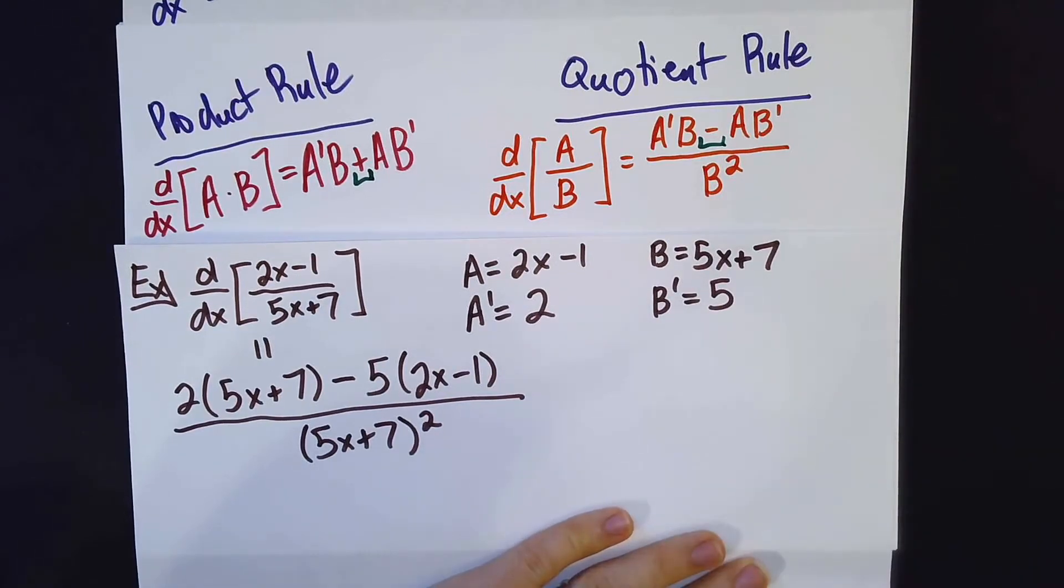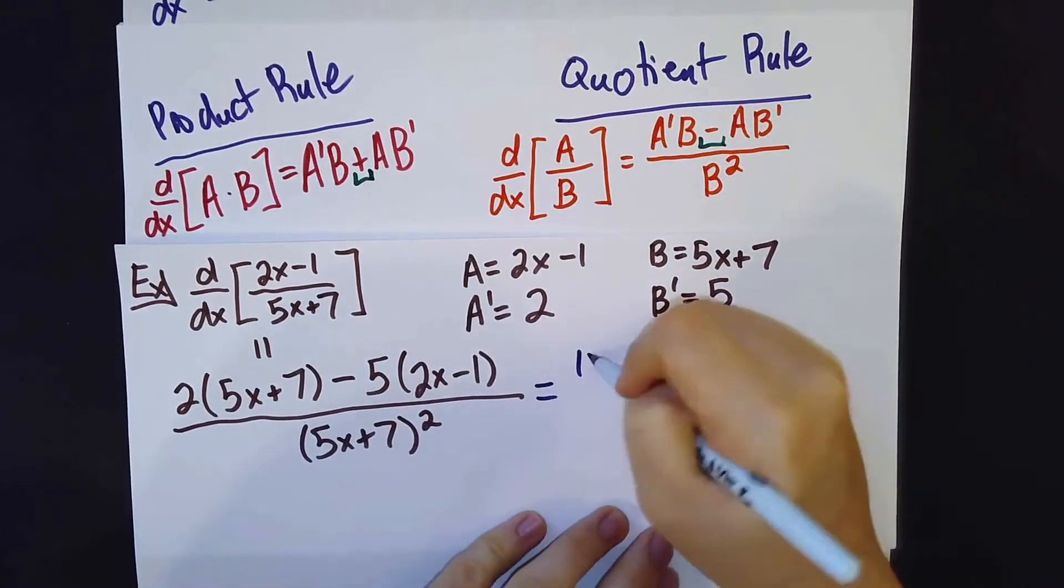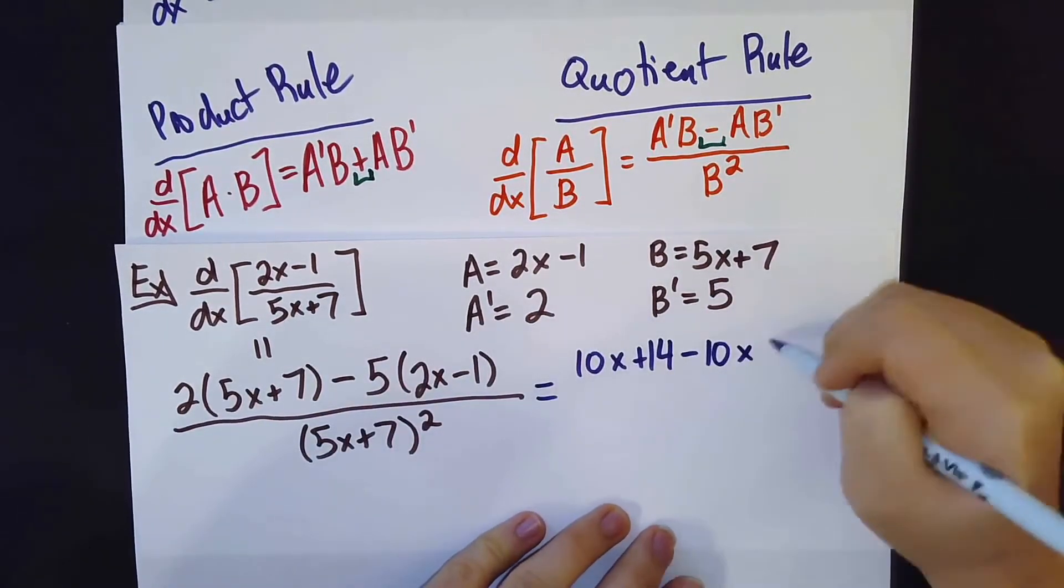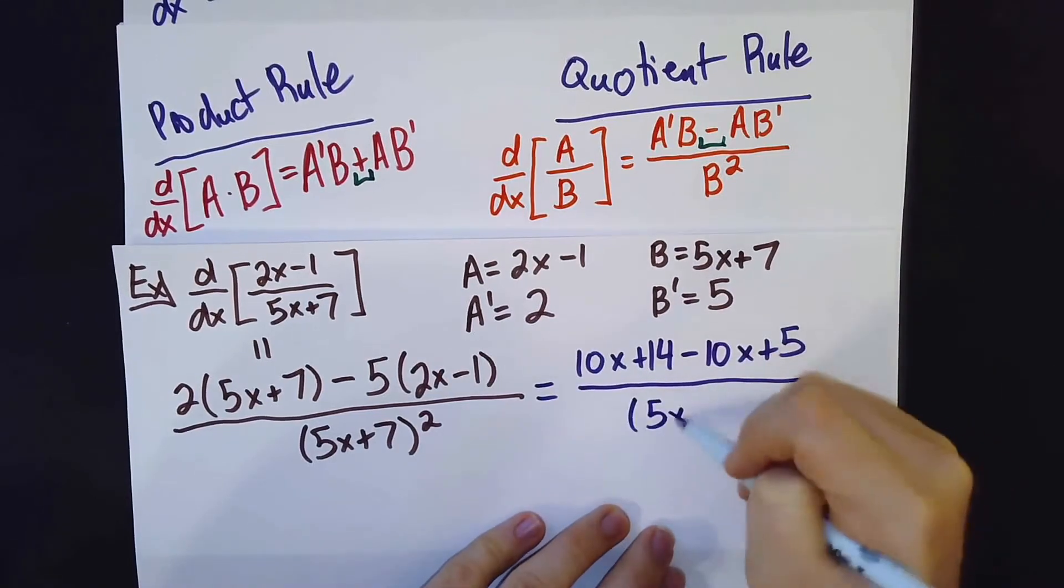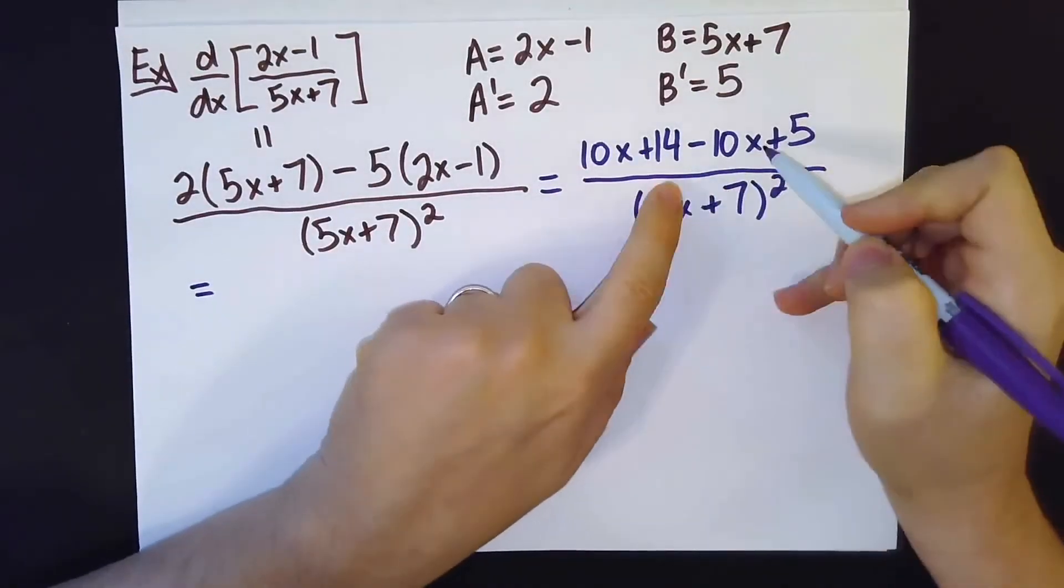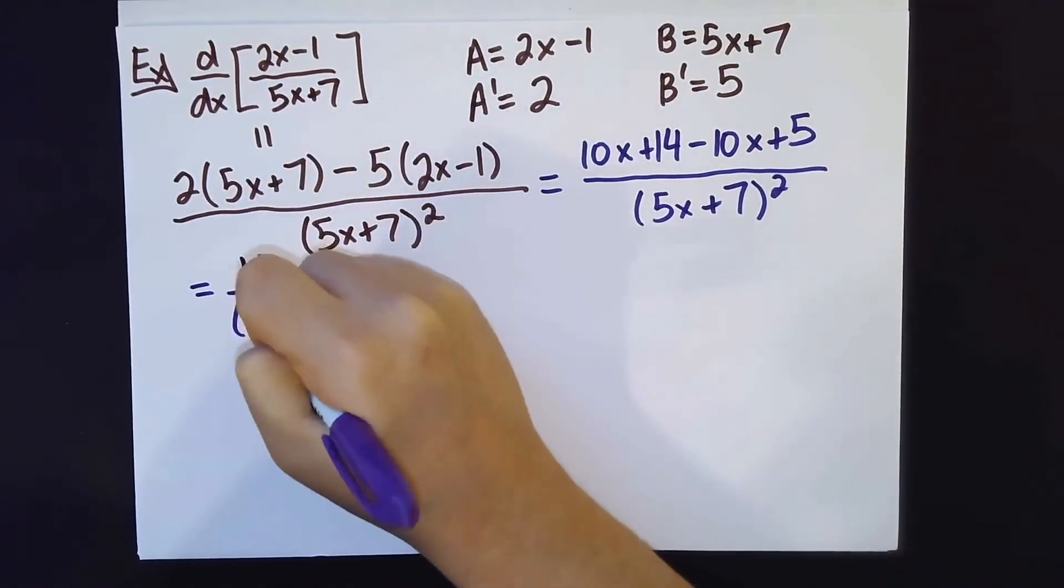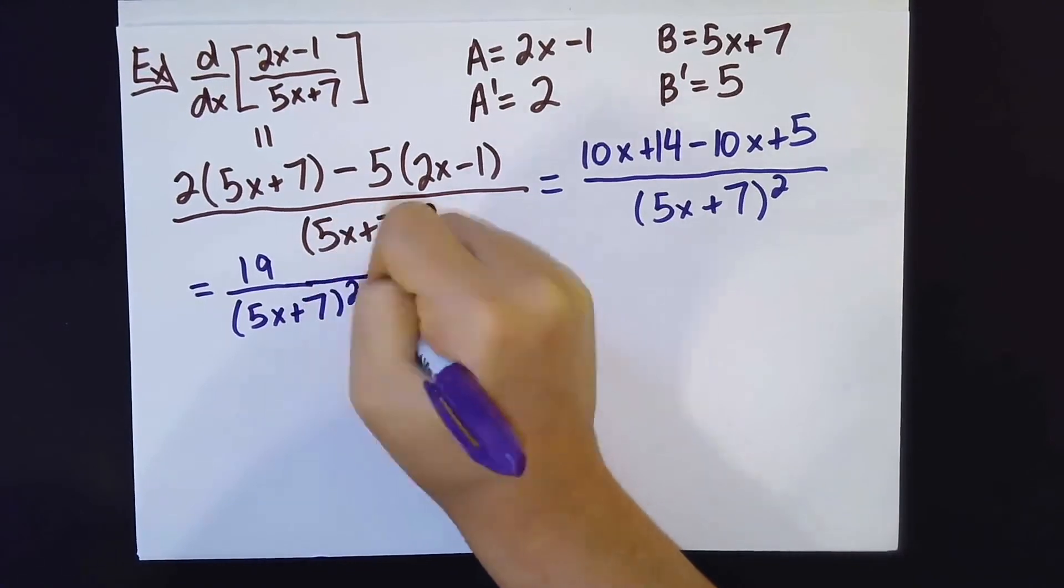And so now all we have to do to finish up this question is simplify this as much as we can. Notice we have a 10x minus 10x, so those go away. And so our answer here is 19 over 5x plus 7 squared.